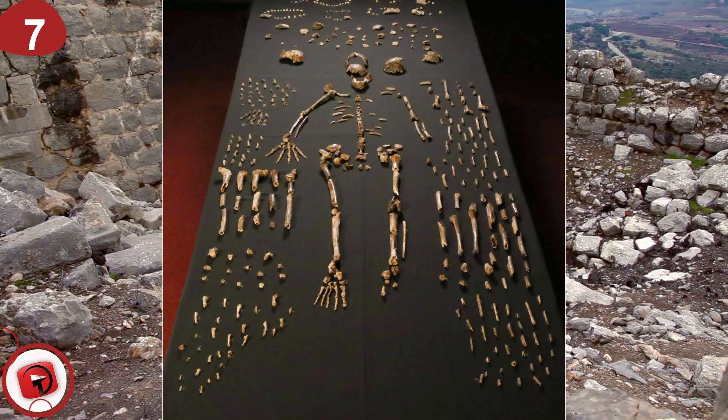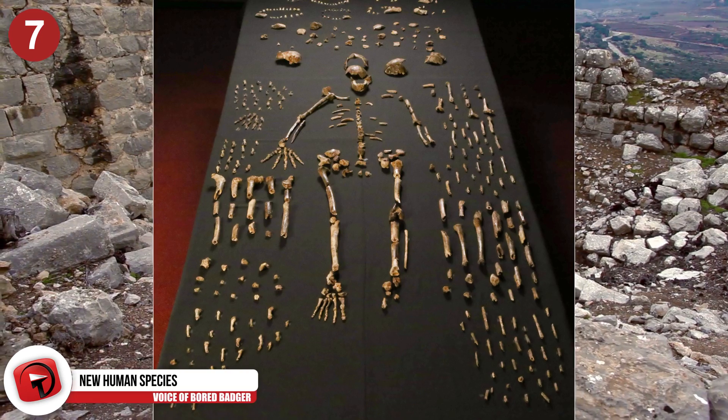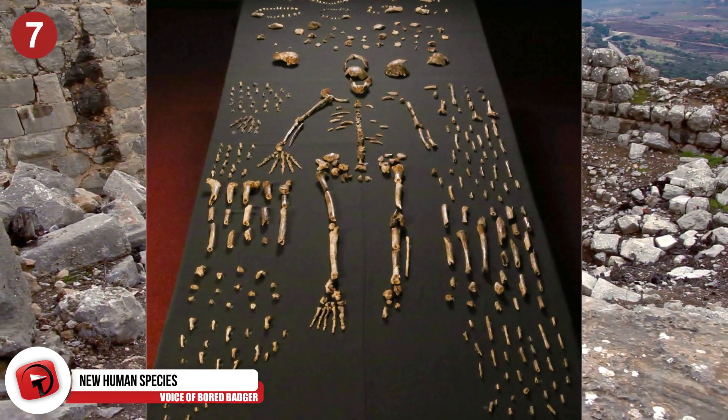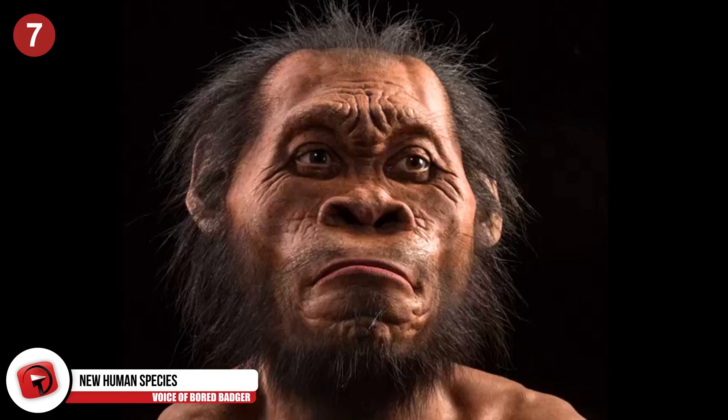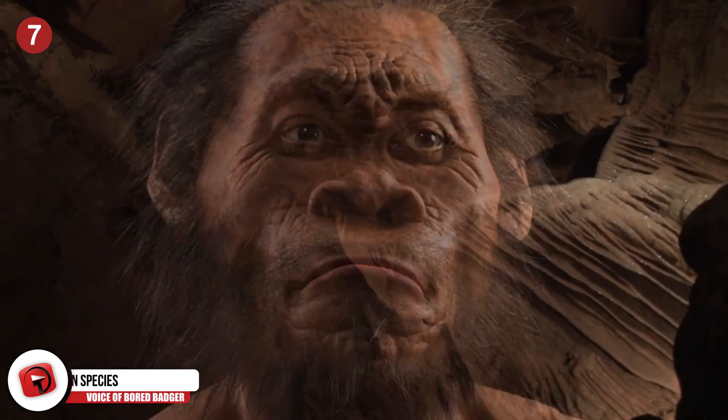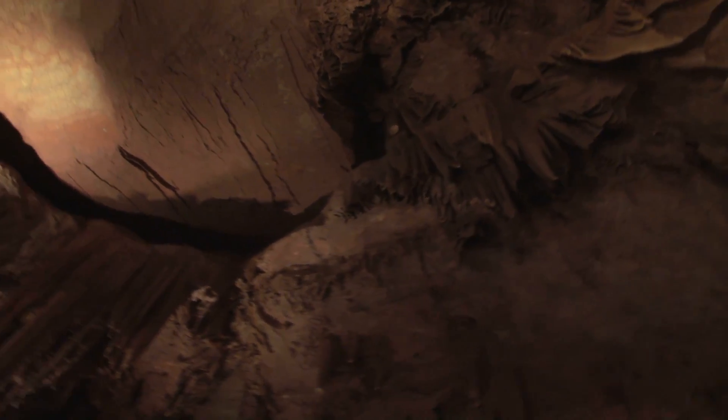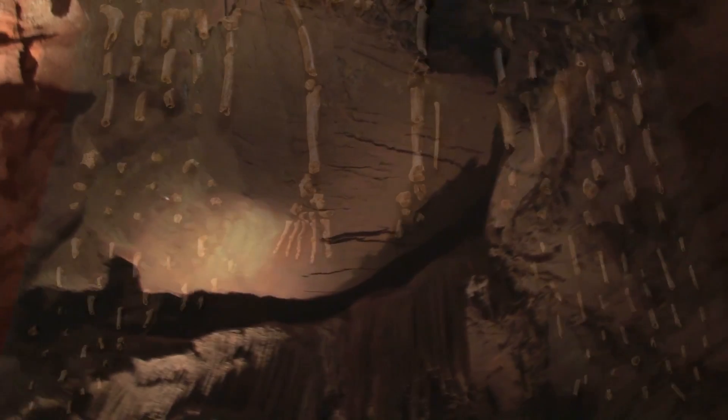Number 7: New Human Species! Biologists all over the world were intrigued upon hearing the 2015 discovery of a new species of human, Homo naledi, allowing for an even clearer picture of our ancient ancestry. The findings were unveiled deep in an underground cave in South Africa and is considered one of the greatest collections of human remains ever on Earth.